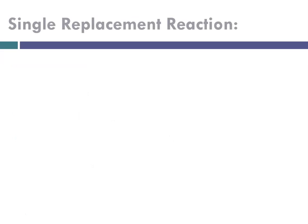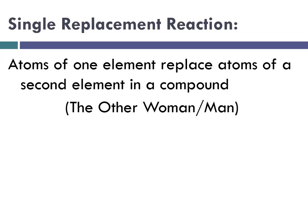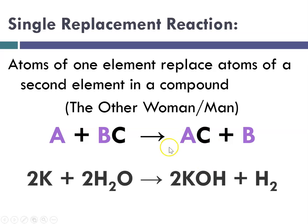The next type is single replacement — sometimes in older books it's called single displacement. That's where atoms of one element replace atoms of a second element in a compound. We can call that the other woman or the other man, where a single element encounters a compound and pushes one of the elements out. It can be cationic if A kicks out the cation in the compound, or anionic if A kicks out the anion.